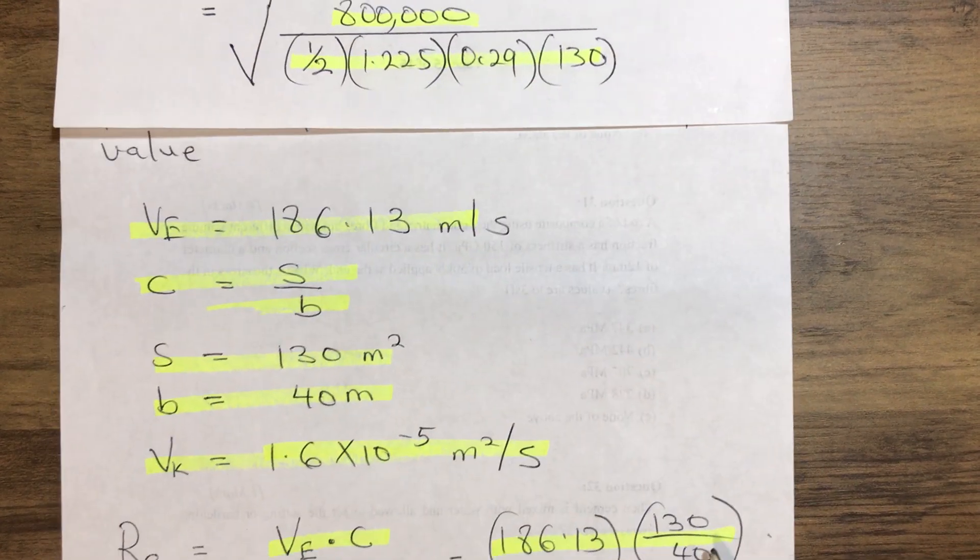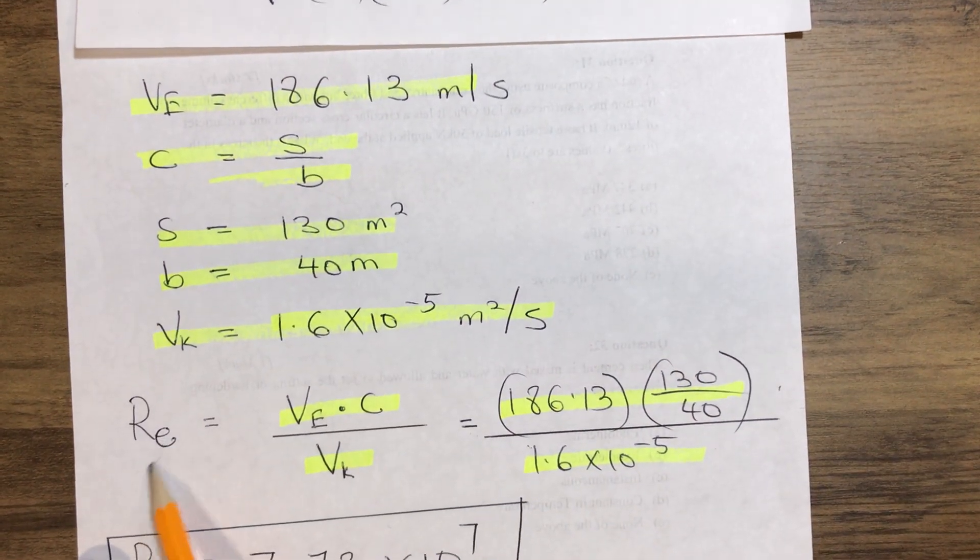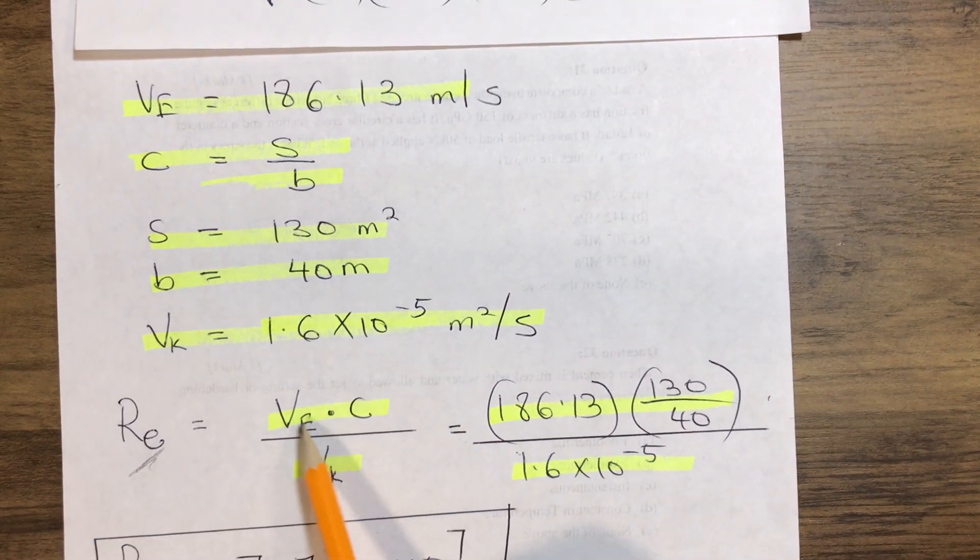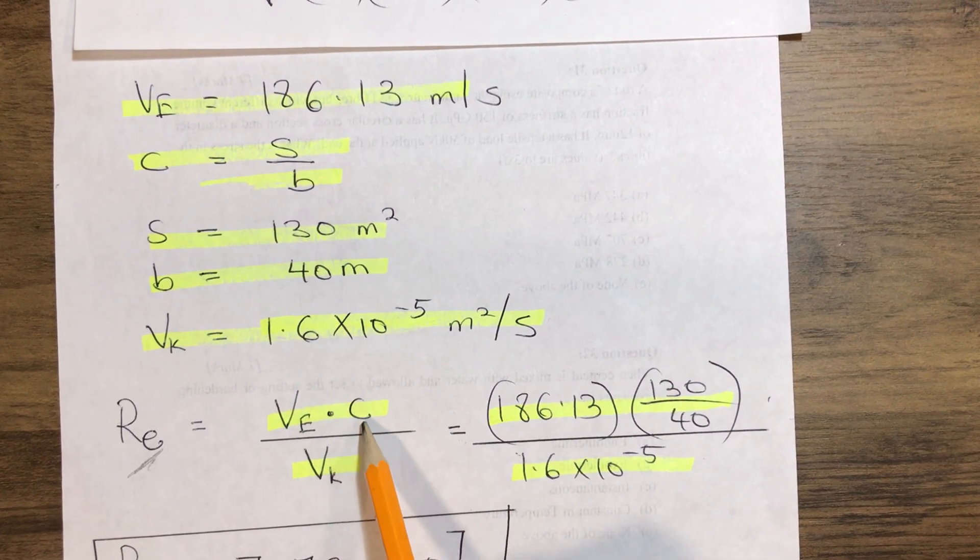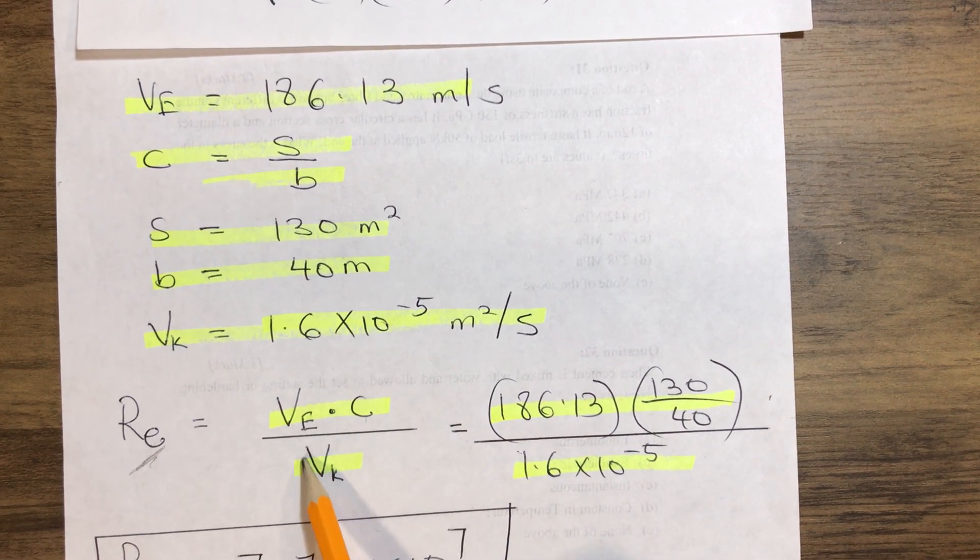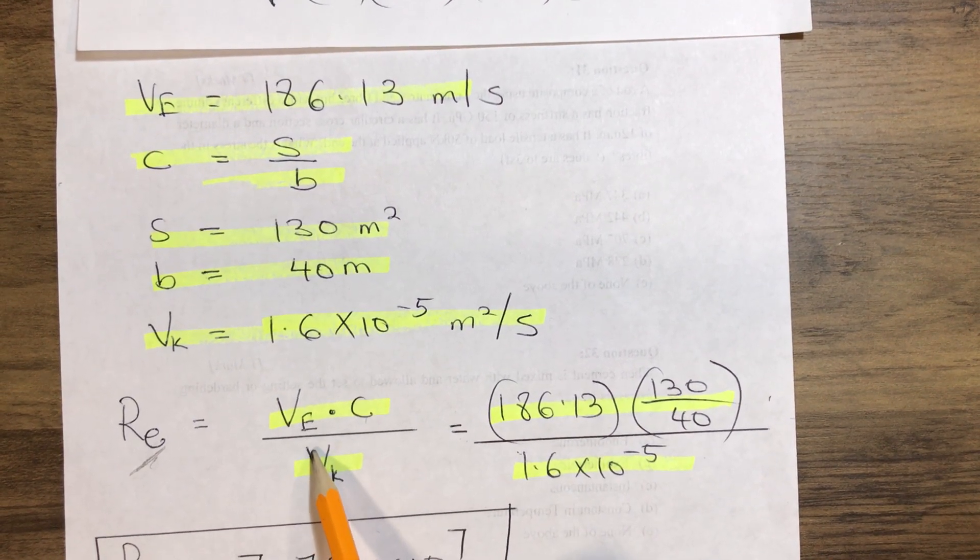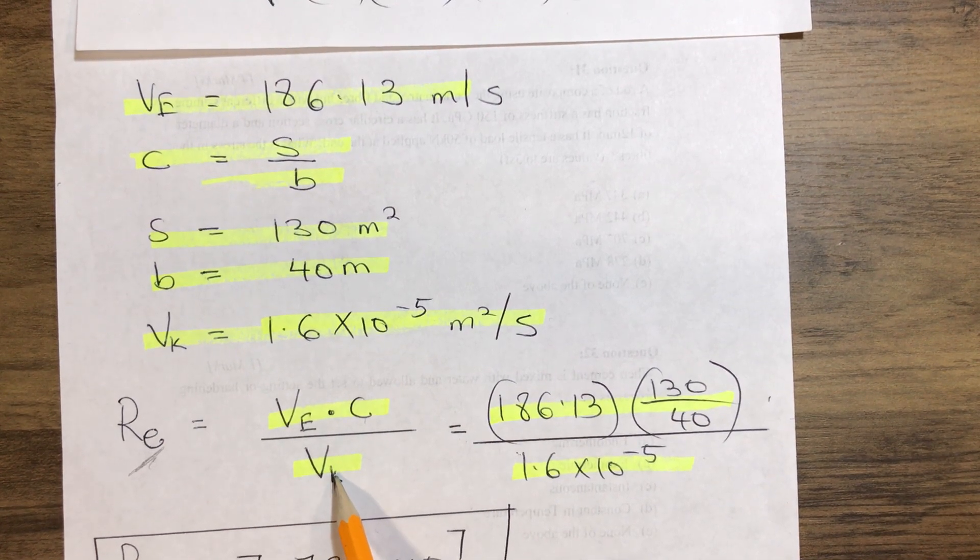Now let's put it in the formula. Therefore we have our Reynolds number which equals the equivalent speed of aircraft multiplied by the chord of the wing over the given kinematic viscosity at the altitude.